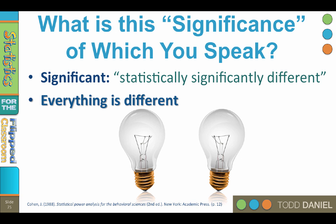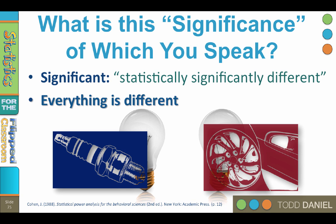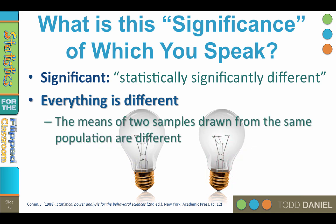Even things that we think are the same are different. Two seemingly duplicate light bulbs are different. Identical twins are different. Two spark plugs are actually different. Two cars that roll off the assembly line right after each other are still different. And the means of two samples drawn from the same population, like identical twins, are different. Go out to enough decimal places and everything is different.